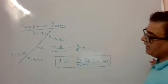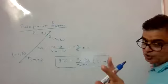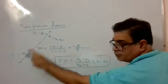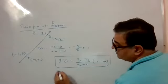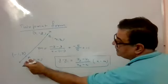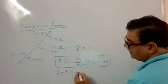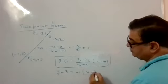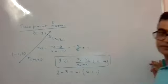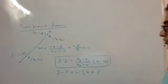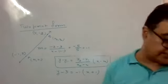The point can be anything you choose — either point works. So the equation is y minus y1, giving y minus 3 equals minus 1 times (x plus 1). That is the equation of the line.